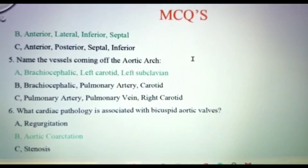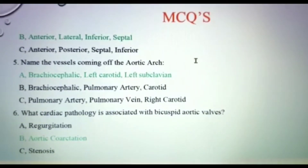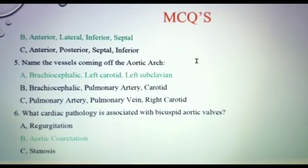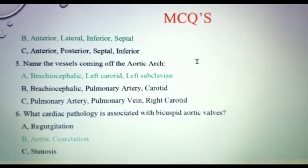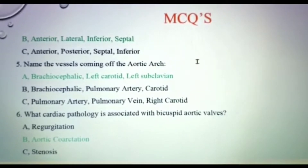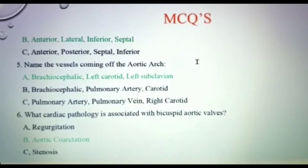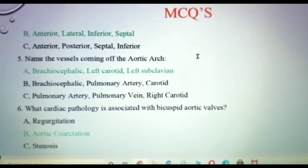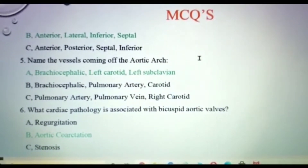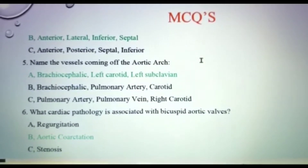Name the vessels coming off the aortic arch. The vessels coming off the aortic arch are the right brachiocephalic or innominate artery, the left common carotid artery, and the left subclavian artery.